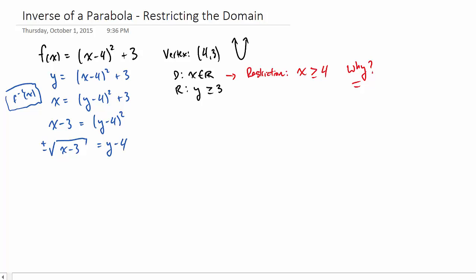we have to put a plus or minus in front of that square root. Rearrange this a little bit more, we have our inverse function.